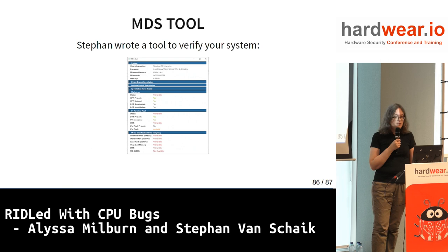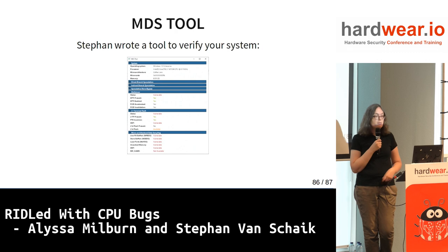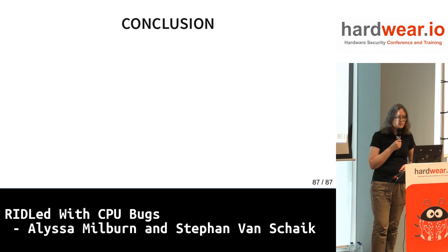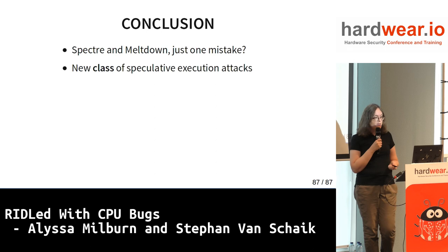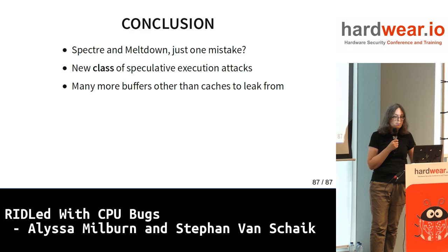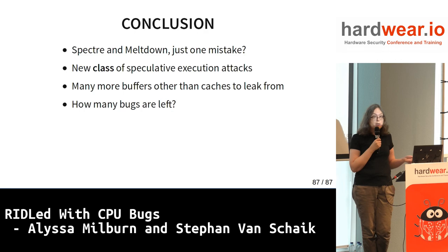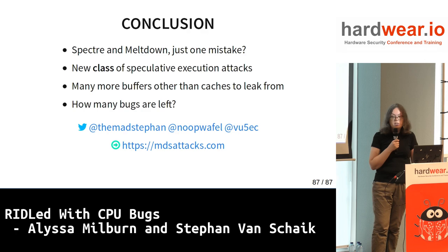You can find more information on our website. There's also a tool you can download that checks whether Intel's mitigations are in place and what Intel says about whether your CPU is vulnerable. To conclude: we thought Spectre and Meltdown were just bugs, just one issue. Turns out this is going to keep giving for decades. We found a new class of speculative attacks leaking from a whole bunch of buffers. The question isn't whether there are more bugs — the question is how many of these things are left and how many will be found over the next few years. Hopefully by some of you. You can ping us on Twitter and we have a website.